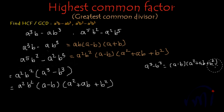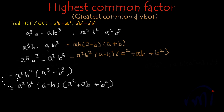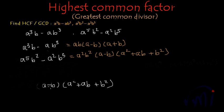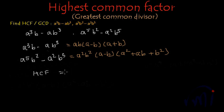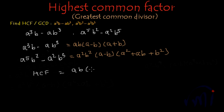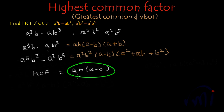Now we don't need the formula so I am going to remove those steps, and now we have to find the common factors. For the HCF: in the first expression we have one a and one b, and in the second we have a square b square — so a and b can be taken common. And we have (a minus b) at both places, so that can also be taken common. Therefore, the HCF of a³b minus ab³ and a to the power 5 b square minus a square b to the power 5 is ab multiplied by (a minus b).